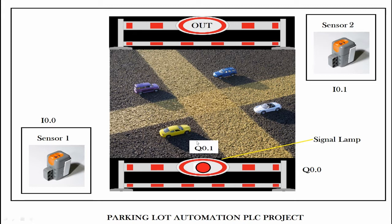To handle this, we have two barriers — one barrier at the inlet for incoming traffic and one barrier for outgoing traffic. We have Sensor 1 and Sensor 2: Sensor 1 takes care of traffic getting inside the parking lot, and Sensor 2 takes care of traffic going outside the parking lot.